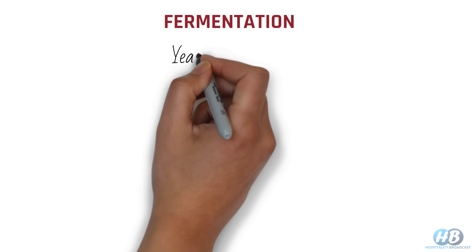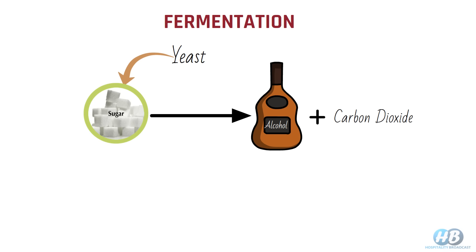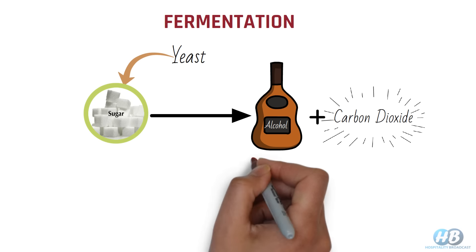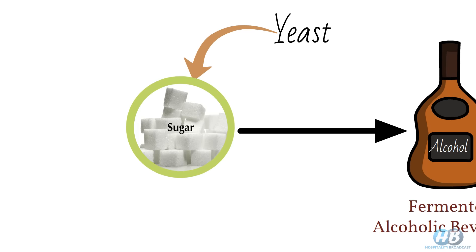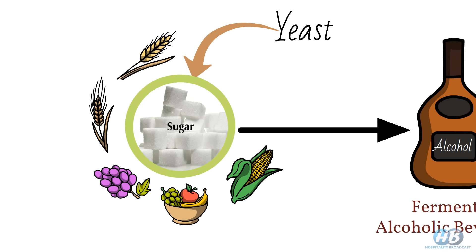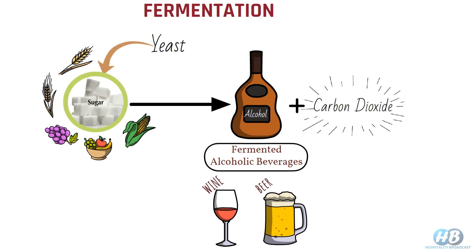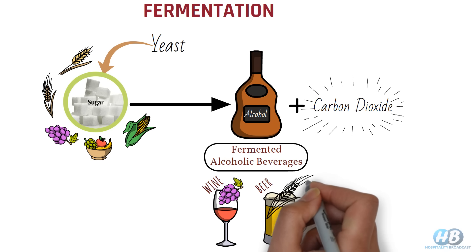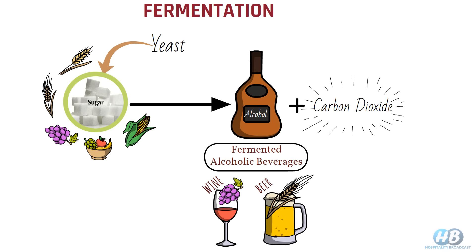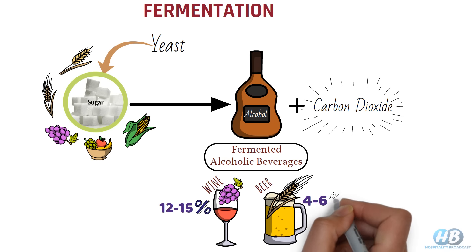Alcohol is created through a process called fermentation, where yeast breaks down the sugar into alcohol and carbon dioxide. Carbon dioxide is later evaporated and this beverage we are left with is called a fermented alcoholic beverage. We can get this sugar from cereals, fruits, or some other plant extracts as a base for fermentation. Examples of fermented alcoholic beverages are wine and beer. Generally, for wine we use grapes and for beer, barley is used as a base product. Fermented drinks like wine typically have an alcohol content from 12 to 15 percent, and beer even less than that, around 4 to 6 percent.